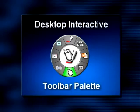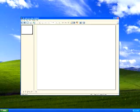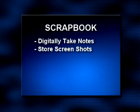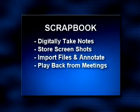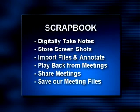From the desktop interactive tools palette, let's select the scrapbook icon and launch the digital annotation software application, which turns our 3M digital board into a digital workspace. Scrapbook allows us to digitally take notes while meeting, brainstorming, or planning sessions. Store screenshots of any image on your computer desktop. Import PowerPoint, Excel, Word, and image files and then annotate over those image files. Playback, edit, and annotate pages from our scrapbook meeting file. Share meetings over the internet or intranet with anyone in real time. Automatically save our meeting files to ensure we never accidentally lose important notes or a presentation.